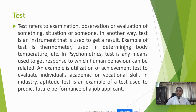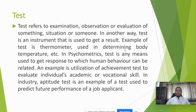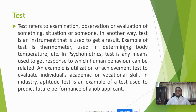A test can also be an instrument used to get a result. There are many examples of these tests — things like a thermometer, a temperature gauge, and so on. During COVID-19, there was that device that looks like a gun used at doors to check temperature — we can call that a test. In psychometrics, a test is any means used to get a response to which human behavior can be related.